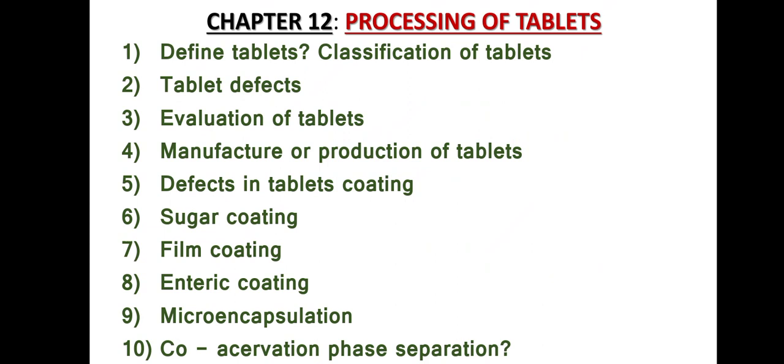Chapter twelve: Processing of Tablets. There are ten important questions. Question one: Define tablets and classification of tablets. Question two: Tablet defects. Question three: Evaluation of tablets. Question four: Manufacture or production of tablets. Question five: Defects in tablet coating. Question six: Sugar coating. Question seven: Film coating. Question eight: Enteric coating.